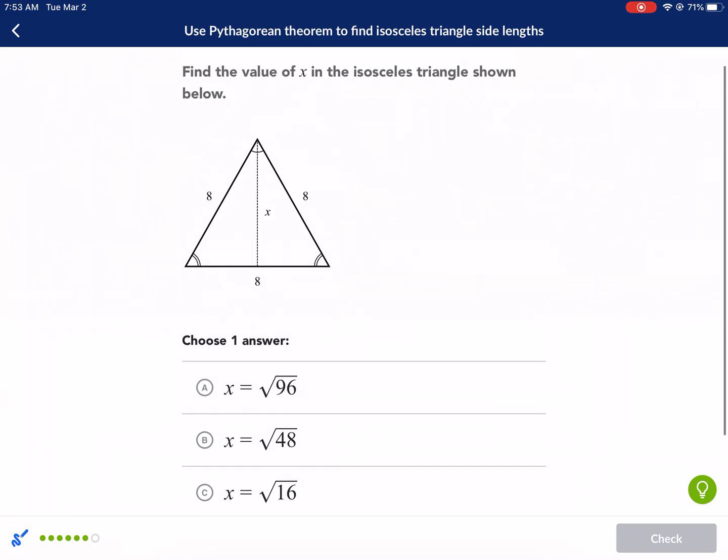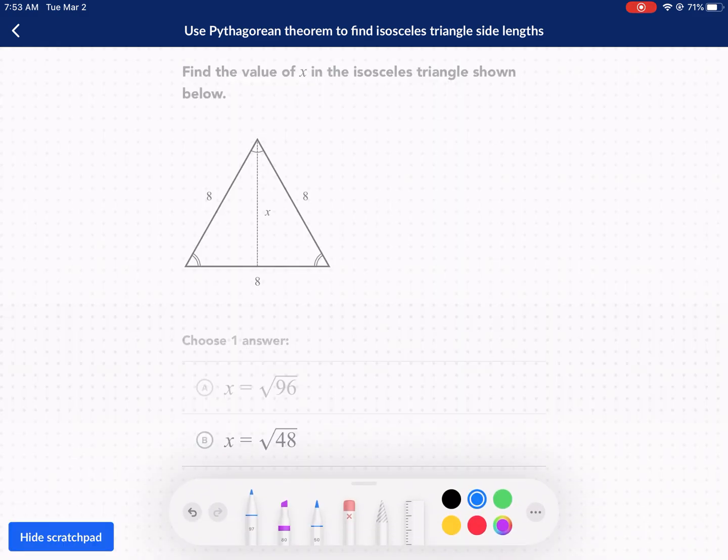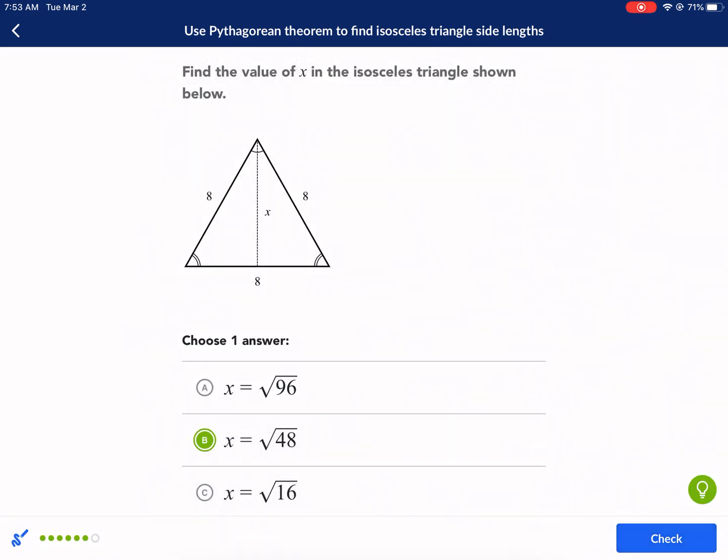Oh, this is actually an equilateral triangle. So you could even know some of your properties of equilateral triangles, but we know that distance is 4. So we have 4 squared plus x squared equals 8 squared. 16 plus x squared equals 64. We're going to subtract 16 from both sides. We get x squared equals that'd be 48. And we're going to take the square root of that. x equals square root of 48.